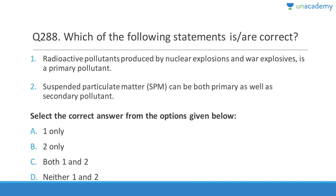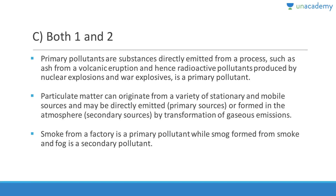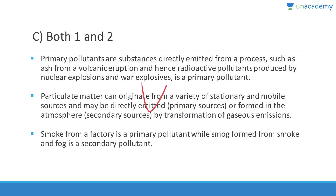Question 288: Radioactive pollutants produced by nuclear explosions and war explosives are primary pollutants — correct. Suspended particulate matter (SPM) can be both primary and secondary pollutants — also correct. Answer is C (both 1 and 2). Primary pollutants are directly emitted from a process; SPM can originate from stationary and mobile sources and can be either directly emitted or formed in the atmosphere.